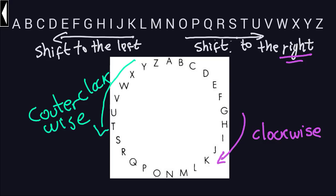So shifting to the right, if we organize the letters in a circular way, would be just moving clockwise the number of positions that the shift tells you, and shifting to the left will correspond to moving counterclockwise in this circular arrangement of letters.